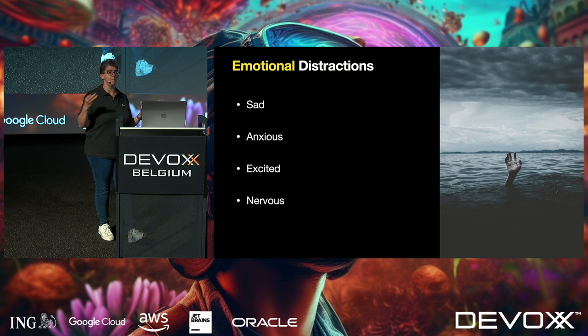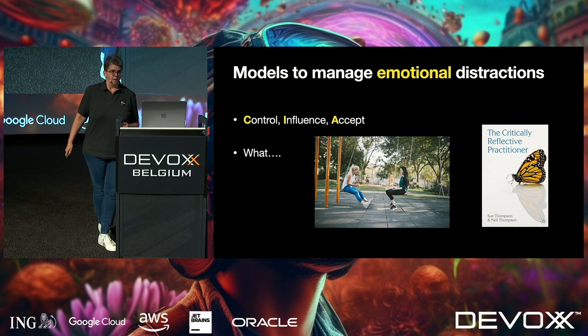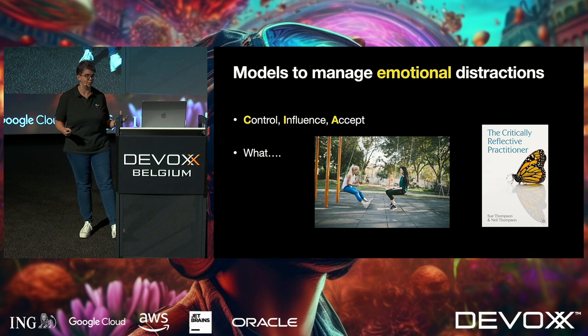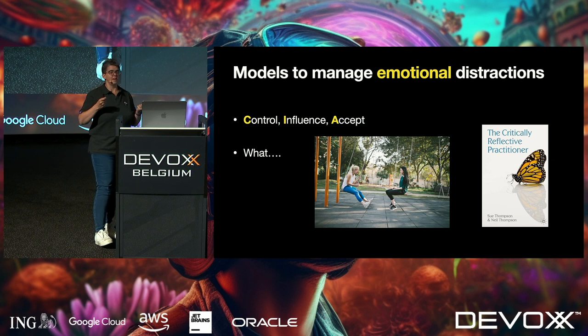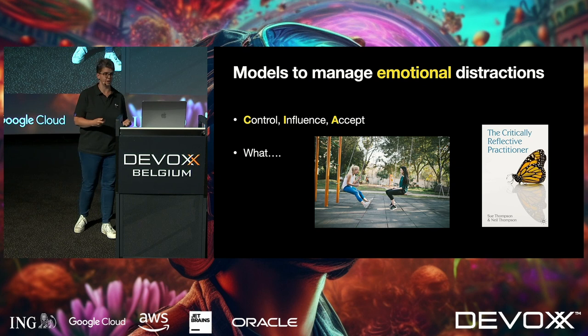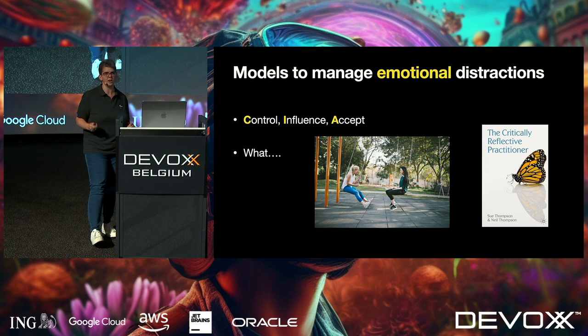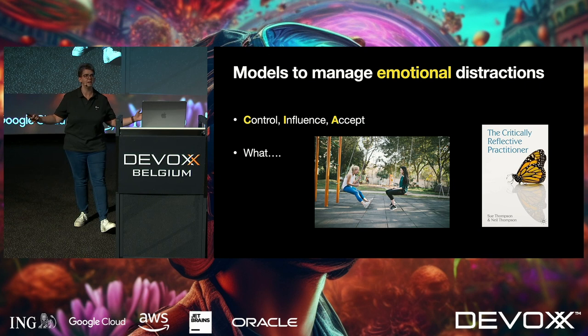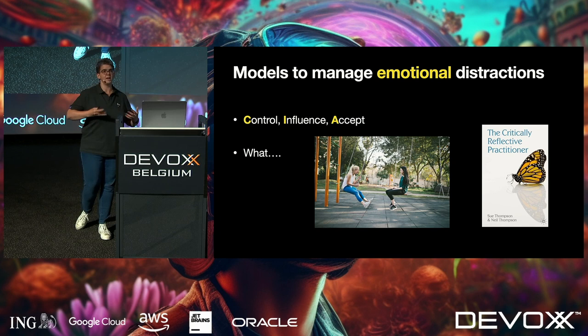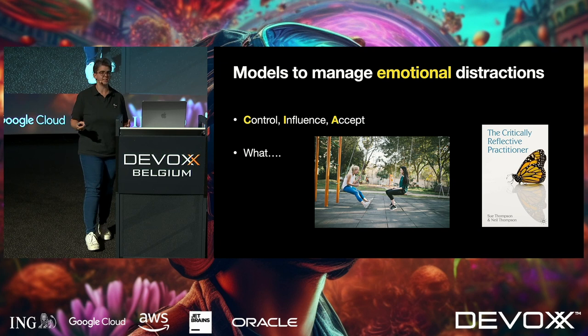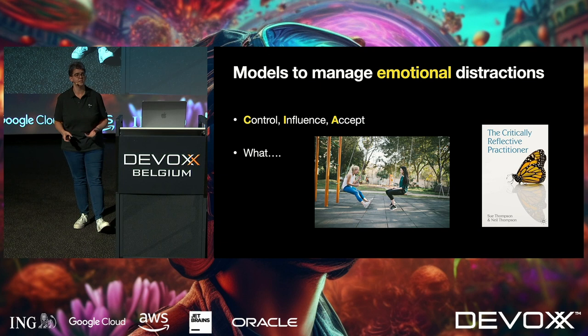The first model I use when my emotions start running wild is the Control, Influence, Accept model — or CIA. Here's the scenario: you push to production at nine at night on a Saturday and production just melts in front of you. The anxiety ramps up, your breathing ramps up, your heart rate goes up. The CIA model is just three questions: What can you control about the situation? What can you influence? And what do you just need to accept?